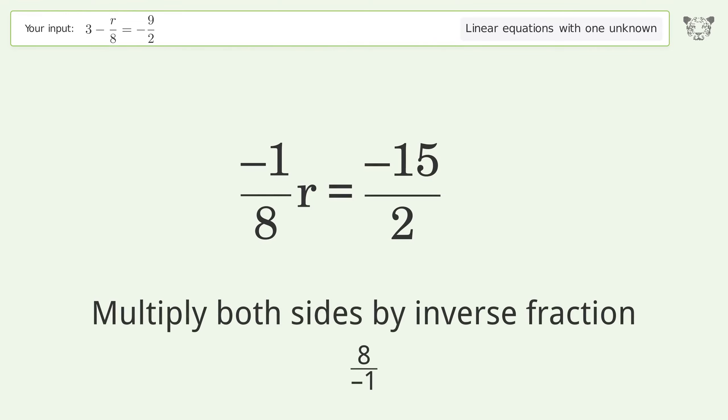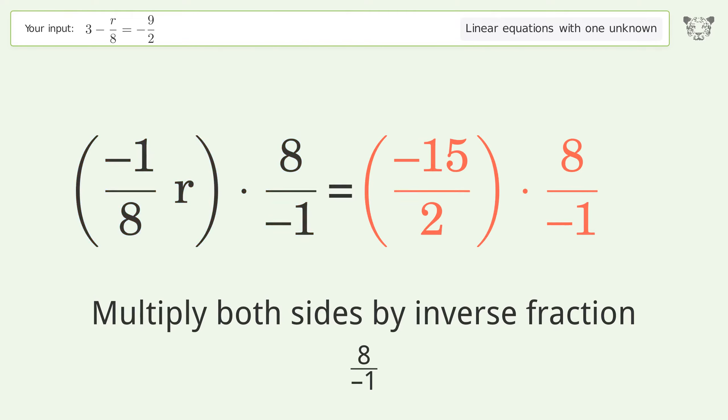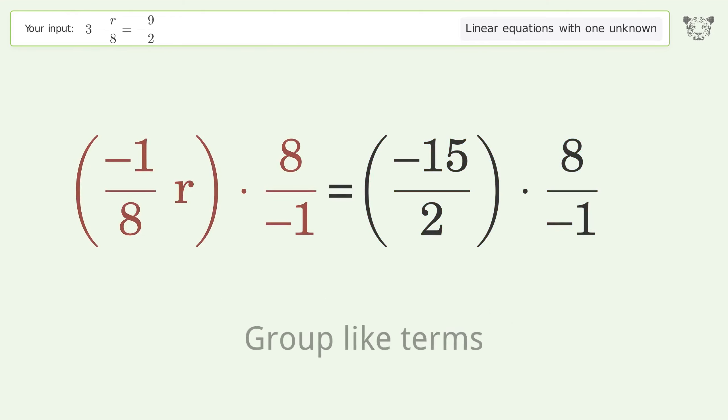Combine the numerators. Isolate the r. Multiply both sides by inverse fraction 8 over negative 1.